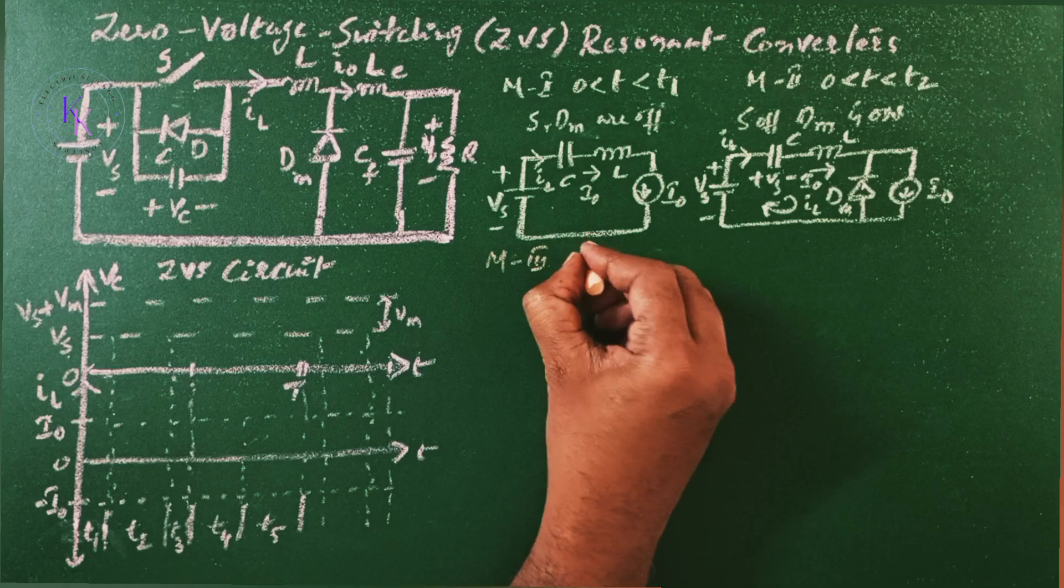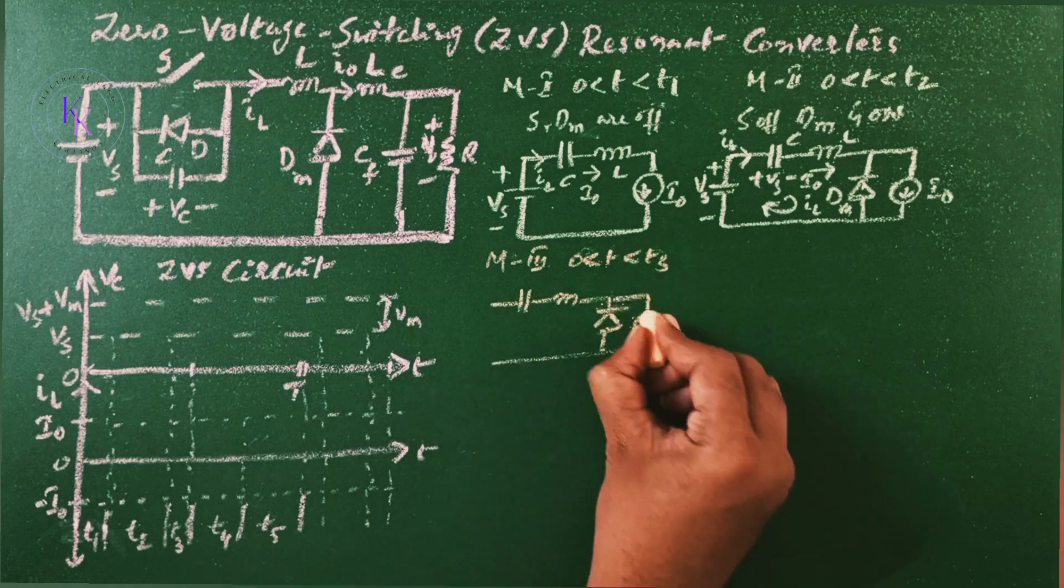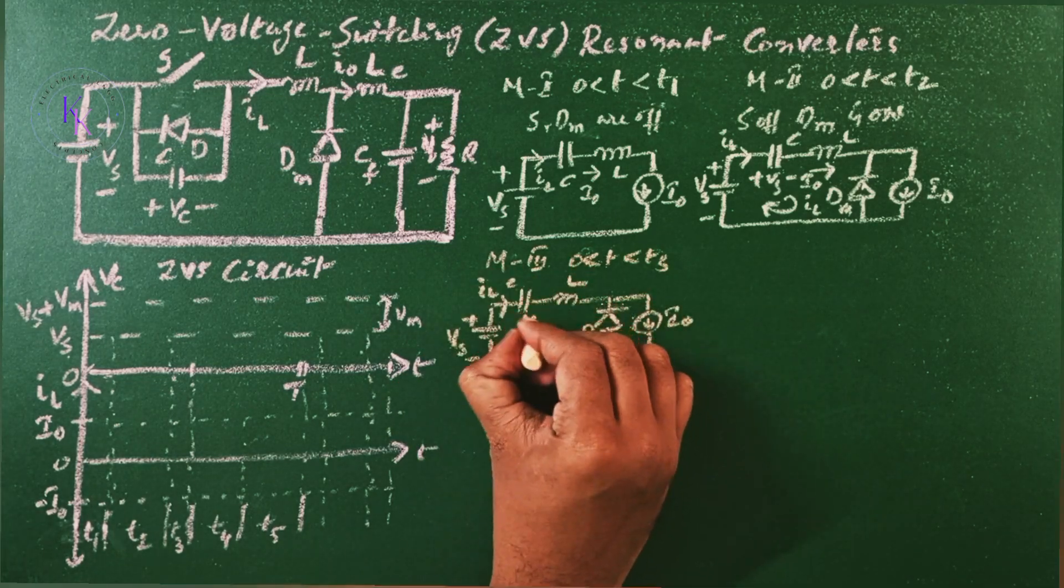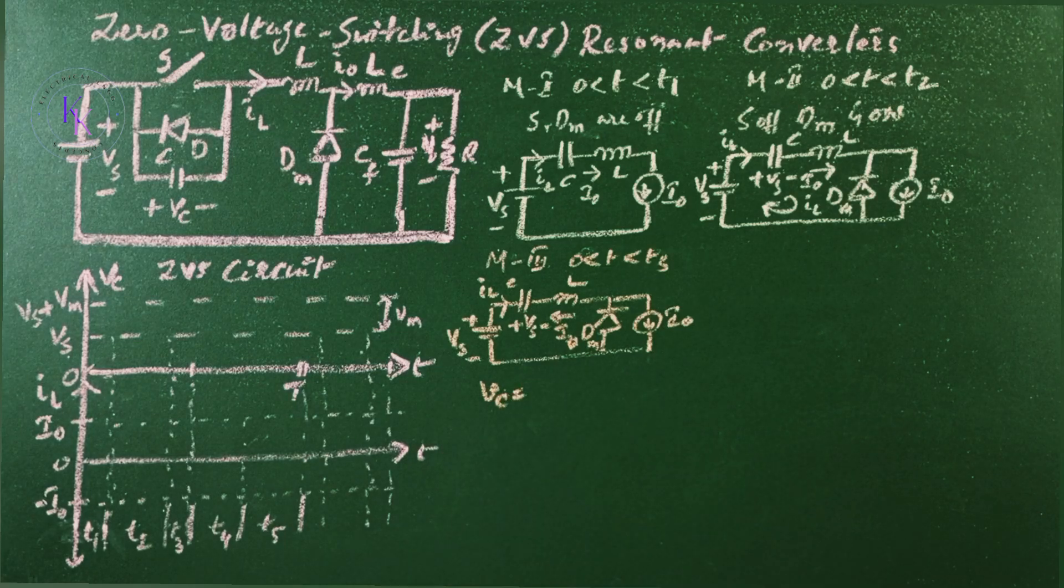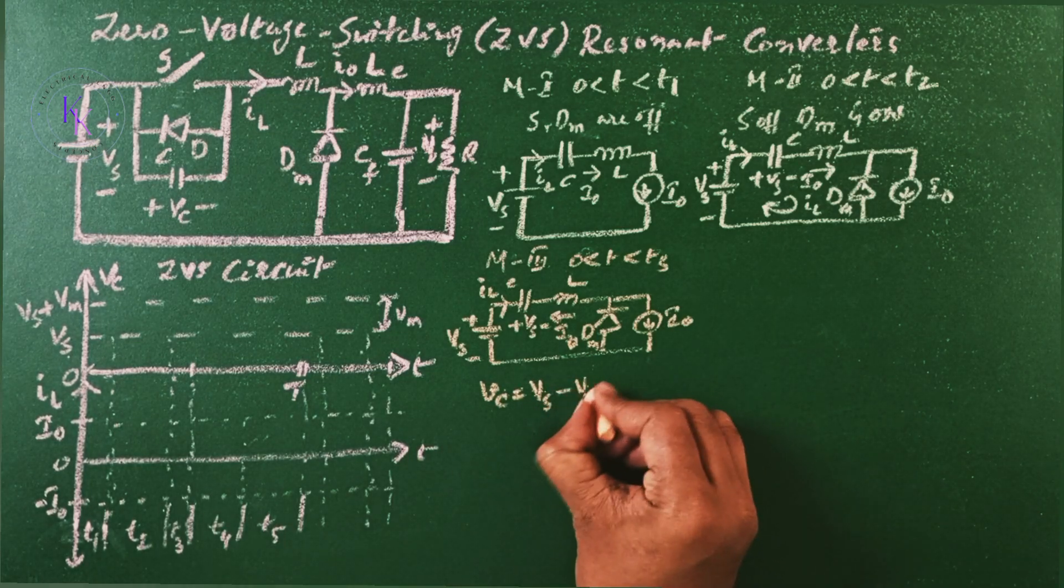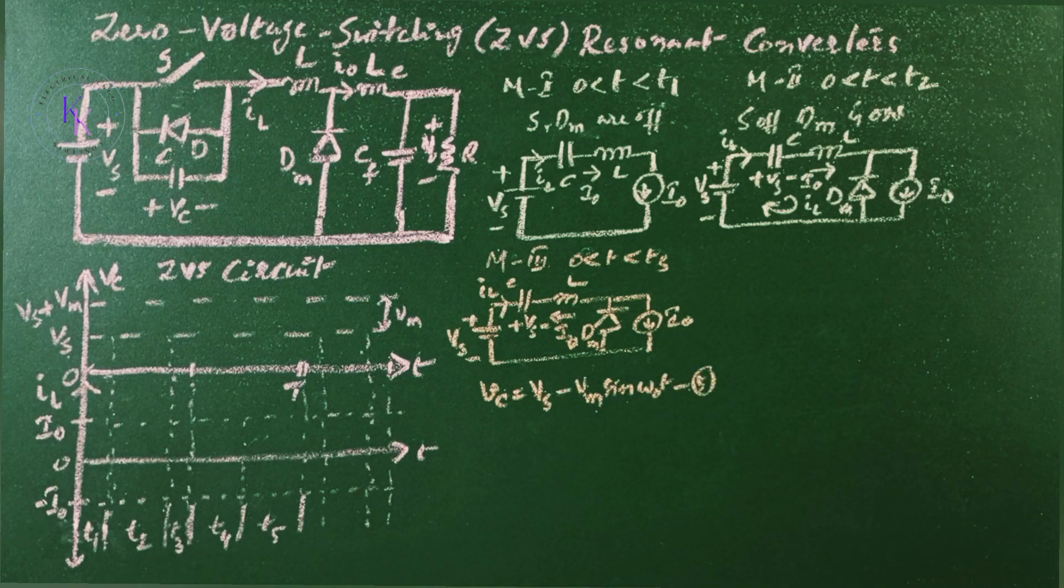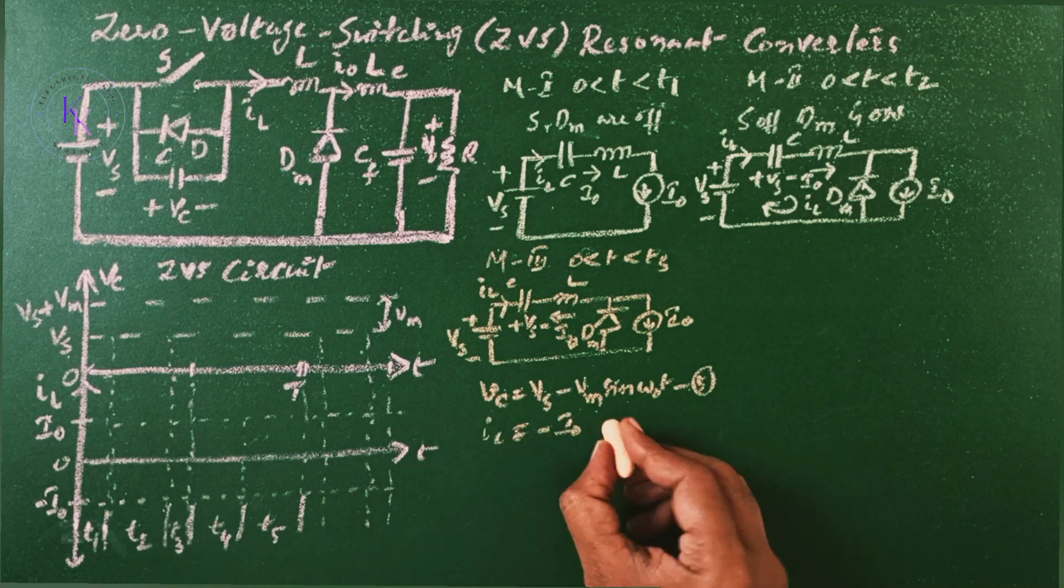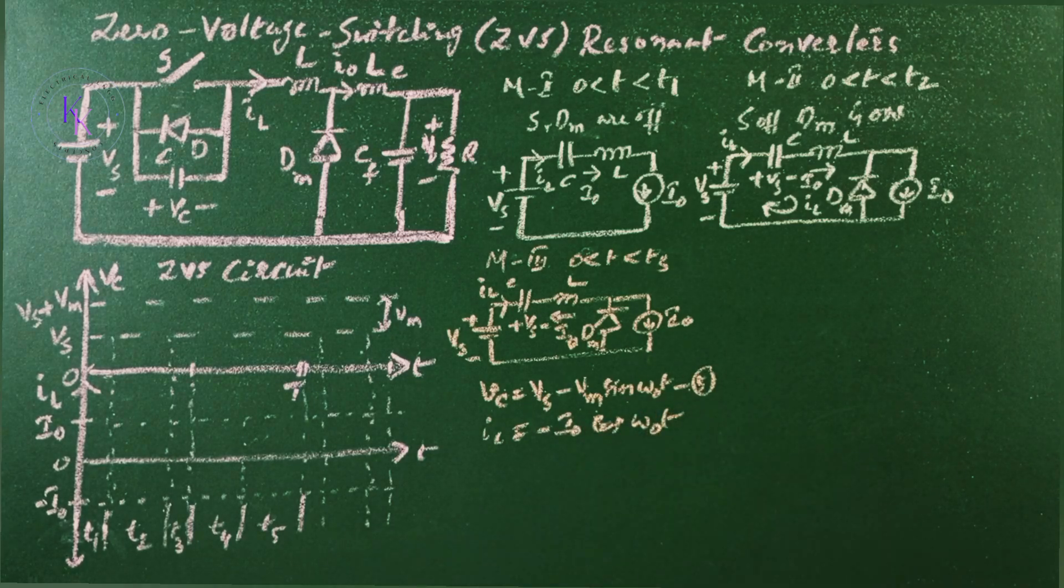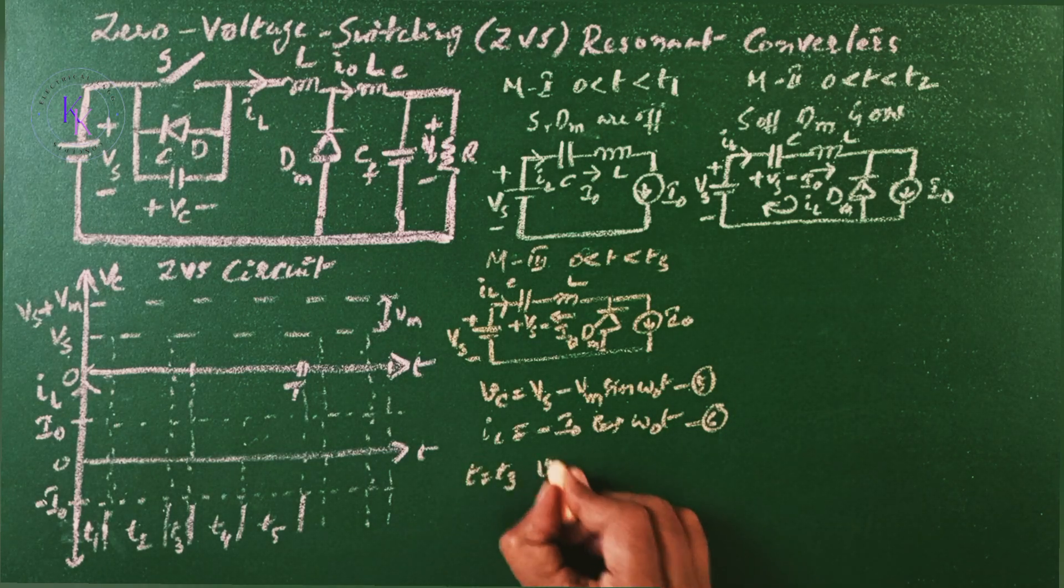Now Mode 3 lies between zero and T3. In Mode 3, the capacitor voltage that falls from VS to zero is given by VC equals to VS minus Vm sin omega naught T. And the inductor current IL is given by minus I0 cos omega naught T.